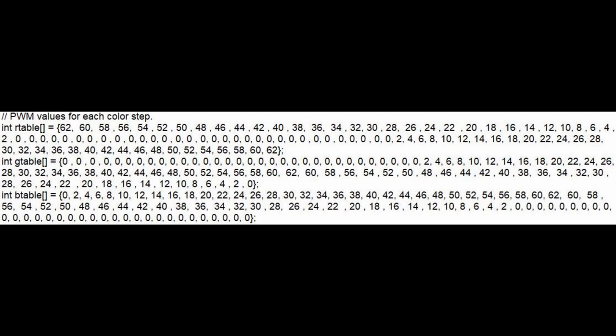In total, it takes 96 steps to go from red through all the colors and back to red again. I used arrays to store the PWM levels for each of the steps. I had to tweak these values to get what looked like an even change in brightness across the 32 steps of each color.